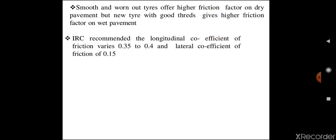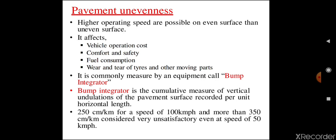As per IRC recommendation, the longitudinal coefficient of friction varies between 0.35 to 0.4, and the lateral coefficient of friction is 0.15. Now coming to the second characteristic of a pavement — that is pavement unevenness.